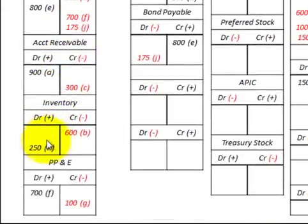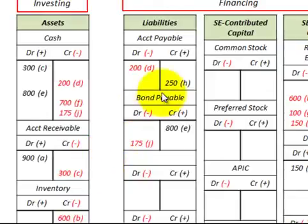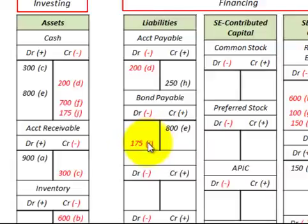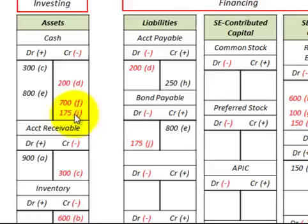We also bought some inventory, increasing our inventory account by $250, and did it on accounts payable, so we increased accounts payable by $250 as a liability. Then we made a payment on our bonds payable, reducing it by $175, and reduced cash by $175 as well.